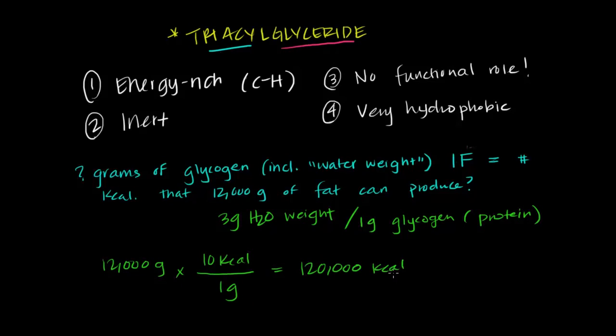So that's how many kilocalories we need to be able to produce with glycogen. Now, with glycogen, we know that for every four kilocalories, we're able to essentially utilize, for every four kilocalories, we're able to get that out of one gram of glycogen. And that's without accounting for its water weight.